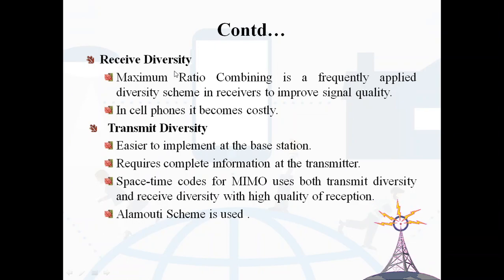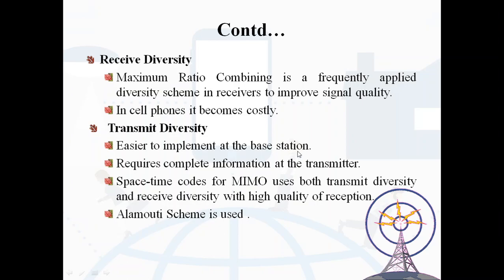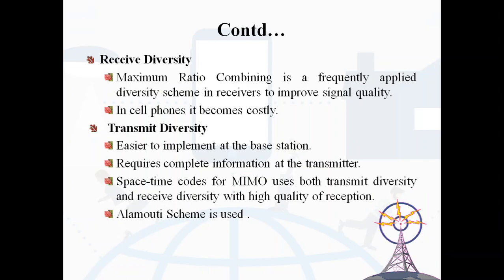Receive diversity: maximum ratio combining is a frequently applied diversity scheme in receivers to improve signal quality, though in cell phones it becomes costly. Transmit diversity is easier to implement at the base station but requires complete channel information at the transmitter. Space-time codes for MIMO use both transmit diversity and receive diversity with high quality of reception. A scheme called the Alamouti scheme is used here, which requires no knowledge of the channel, making transmit diversity easy to implement.